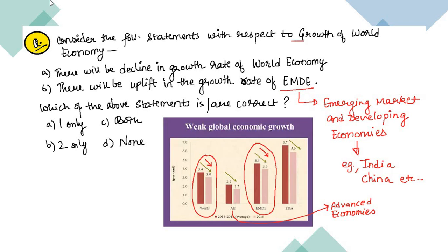Consider statements on growth of the world economy: First, there will be a decline in the growth rate of the world economy. Second, there will be an uplift in the growth rate of EMDE — Emerging Market and Developing Economies such as India and China. Statement 1 is true — decline is visible. Statement 2 is also wrong — EMDE growth rate is also declining. Correct answer is A.